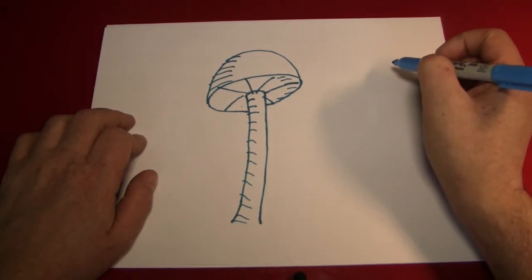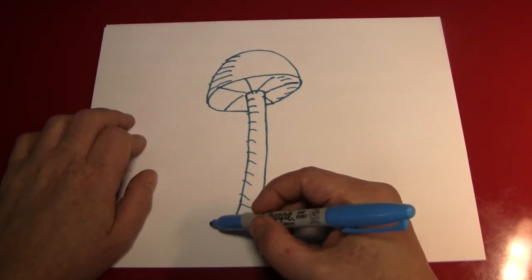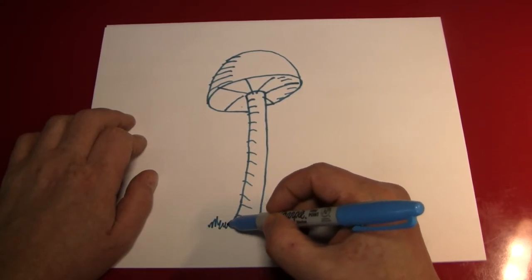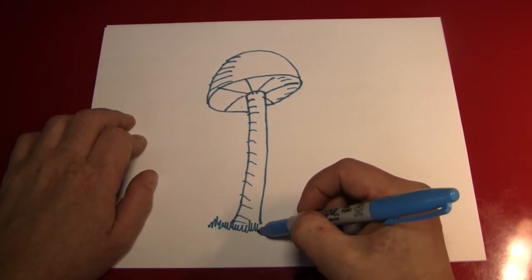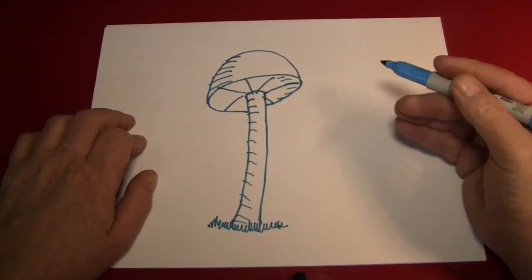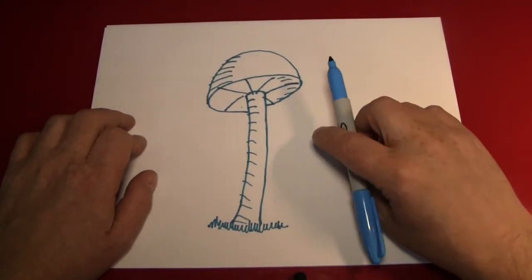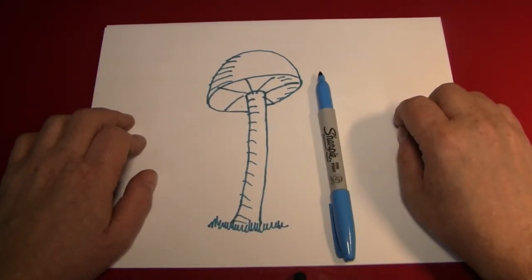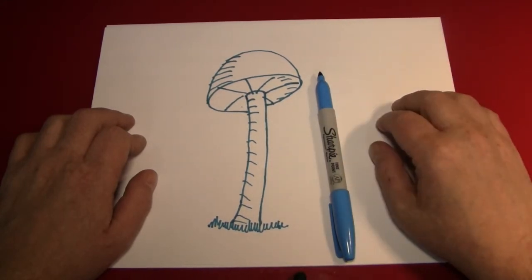Well to finish off our mushroom picture I'm just going to make a little bit of grass. Just squiggly lines to represent grass. And we're done. We have a picture of a mushroom. What does your picture of a mushroom look like?